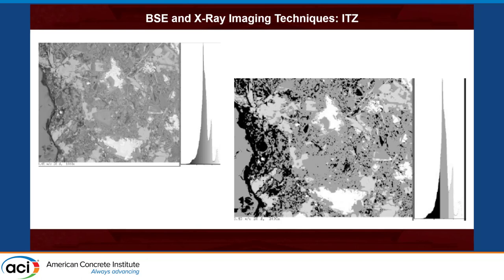For backscatter imaging, the gray level must be optimized for quantification. On the left side the gray level is not optimized; on the right side it is optimized. You can then characterize the ITZ by adding nanotechnology materials such as fine powders and fly ash. This is a great technique to understand the mechanism and justify how microstructure relates to measured properties such as resistivity and transport properties.